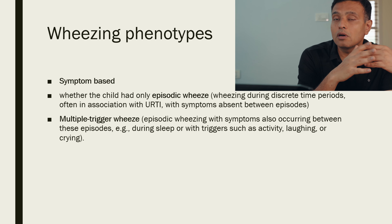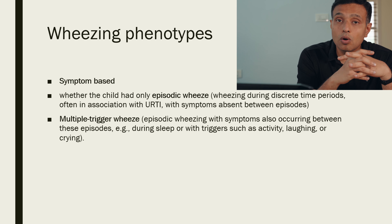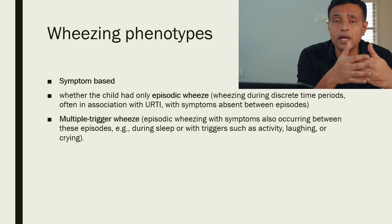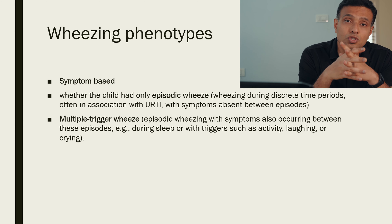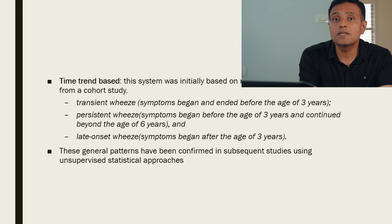There are wheezing phenotypes in children — not asthma phenotypes. Symptom-based phenotypes include episodic viral wheeze, where wheezing occurs during discrete periods often associated with upper respiratory tract infections with a completely normal interval between episodes, and multiple trigger wheeze, where many triggers such as exercise, play, coughing, or crying also induce wheezing.